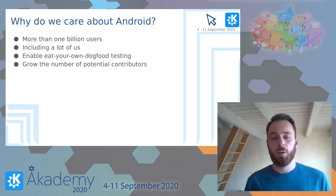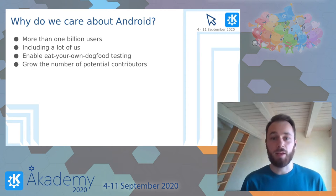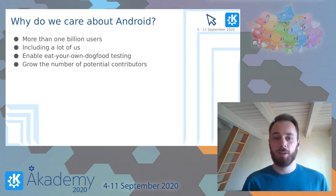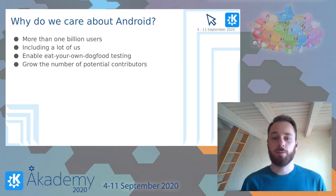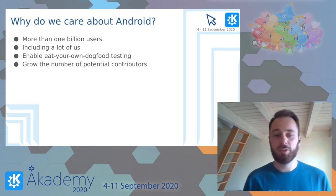Why do we care about Android? Android right now has over 1 billion users — I do not need to tell you how much more this is than we have at this point, and it also includes a lot of us. By bringing our own software that we like and want to use to the devices we actually use in our daily lives, we enable the 'eat your own dog food' testing that is so important for our way of development. And by bringing our software to this very large user base, we automatically increase our number of potential contributors.